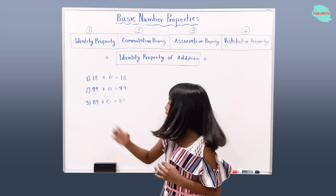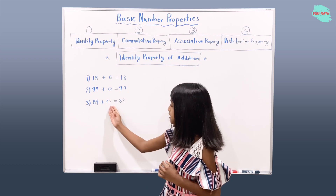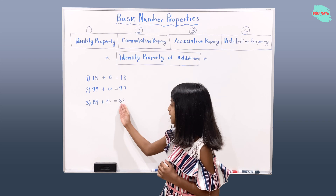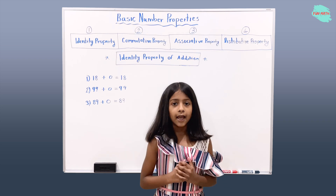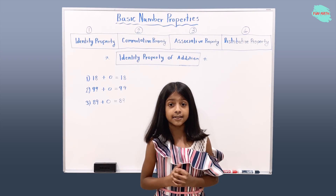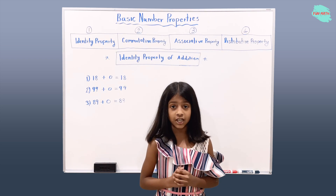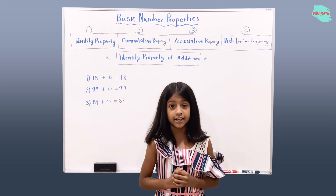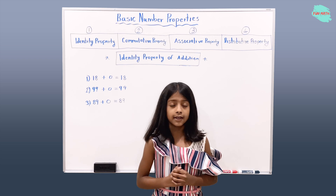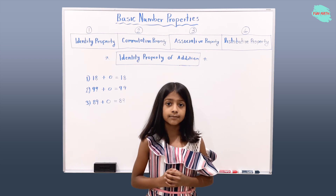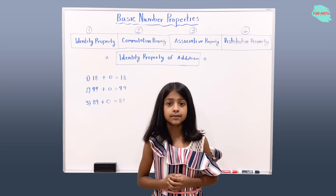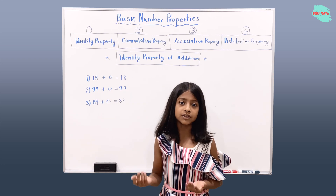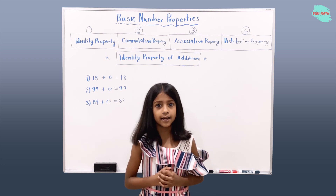The third example: 89 plus zero equals 89. 89's identity is not changing after adding zero to 89, which will still give us 89.